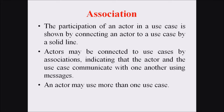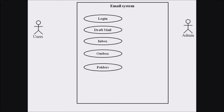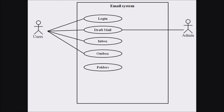The participation of an actor in a use case is shown by the connection of an actor to a use case by a solid line. Actors may be connected to use cases by associations, indicating that the actor and use case communicate using messages. An actor may use more than one use case. For example, in the email system, the users are associated with the processes login, draft mail, inbox, outbox, and folders. Similarly, draft mail, inbox, outbox, and folders are also associated with admin.